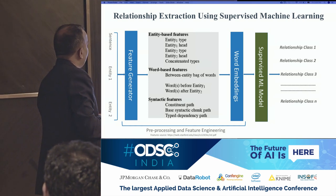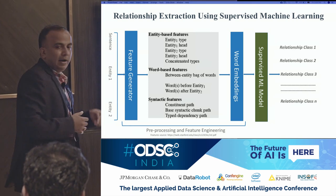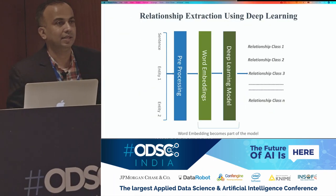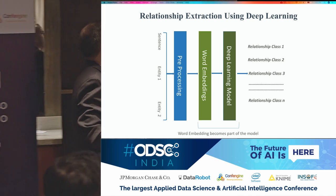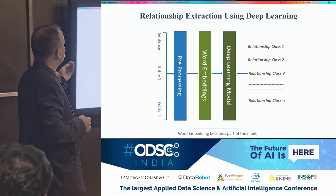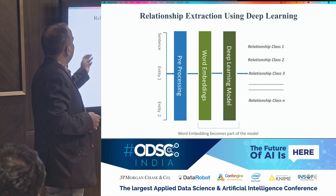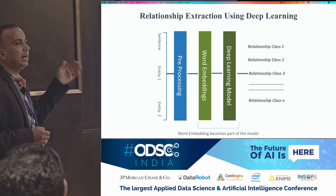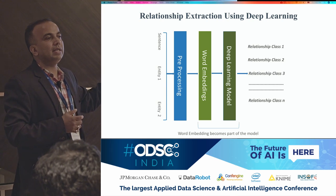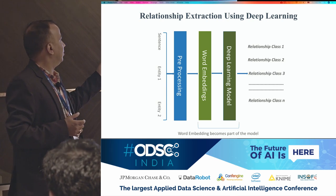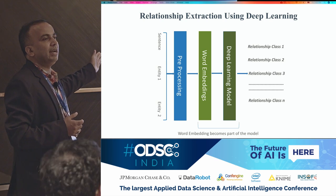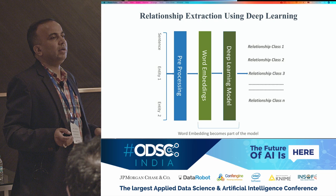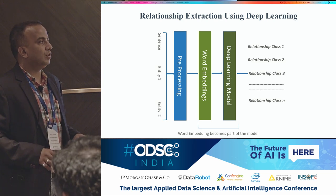With deep learning, all of that feature engineering gets simplified. Basically, you just take the sentence and the entities, do some preprocessing, and the word embedding and the deep learning model become part of the model itself — and you get the relationship. So instead of doing all that feature generation we had to do earlier, we can just let the deep learning network handle it.